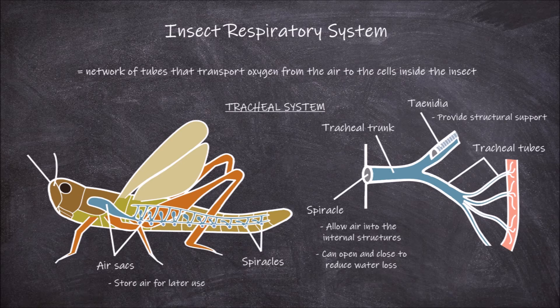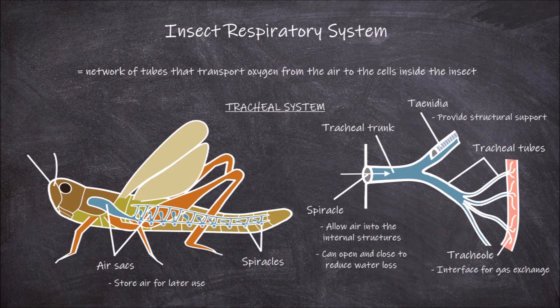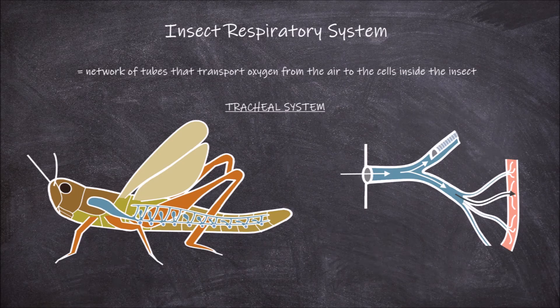At the ends of the tracheal tubes there are fine tubes called tracheoles. The function of the tracheoles is that they provide the interface for gas exchange into the cells of the insect. Air moves in through the spiracles, then through the tracheal system and down into the tracheoles, where gas exchange occurs through specialized cells bringing oxygen to the muscles and cells of the insect.